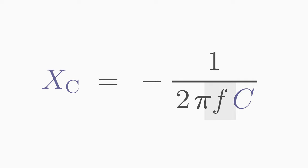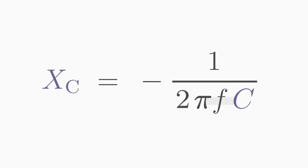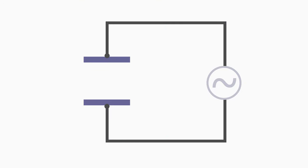If you use a very high AC frequency, the capacitive reactance becomes very small and the capacitor easily lets the current through. If, on the other hand, the AC voltage frequency is very low or even zero, that is if a DC voltage is applied, then the capacitive reactance becomes infinitely large. The capacitor does not let any current through.